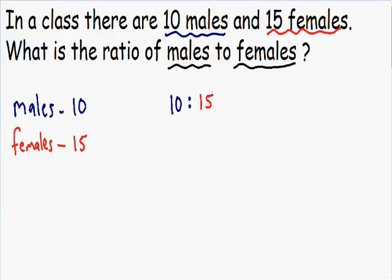But notice how this ratio is not written in simplest form. Both of these numbers can be divided by 5 evenly. If we divide 10 by 5, we get 2. And if we divide 15 by 5, we get 3. So we know for every 2 males there are 3 females — which is exactly the same as saying for every 10 males there are 15 females, just in reduced or simpler form.